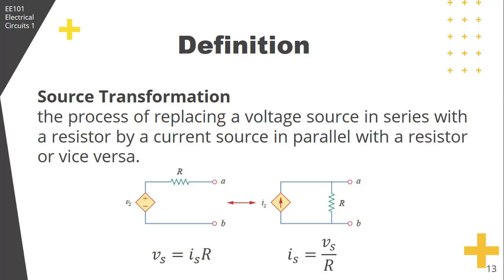Or if this is given, then transform it to this, then IS is just equal to VS divided by R. Or if what's given is on the right, then transform it to this one, then VS is just equal to IS times R. Remember that again, the direction of the current is according to this, that is from negative to positive.